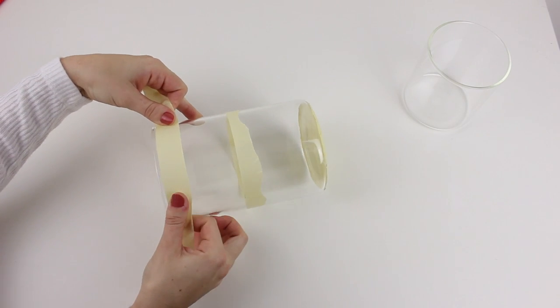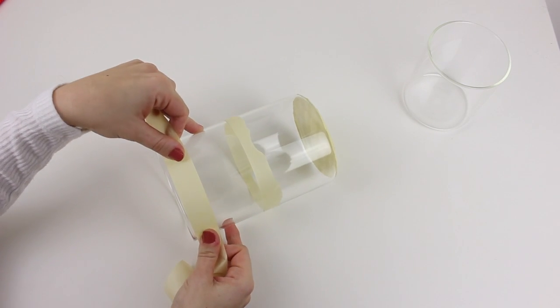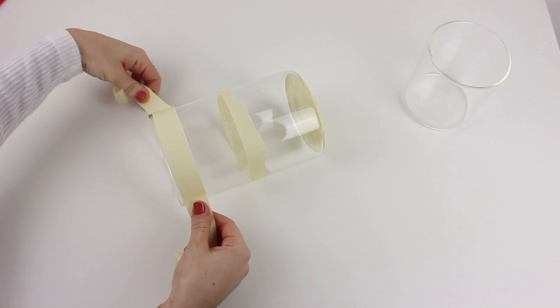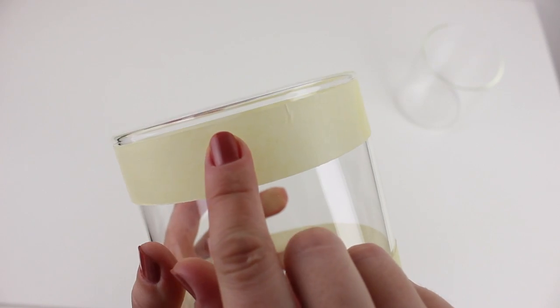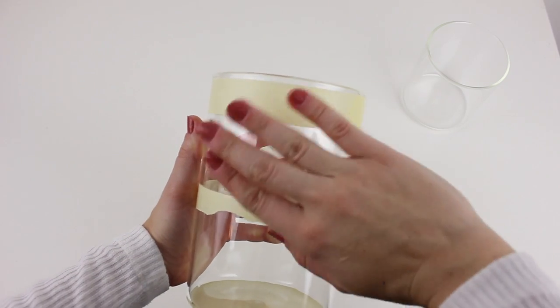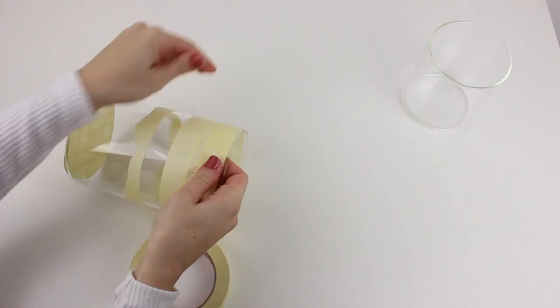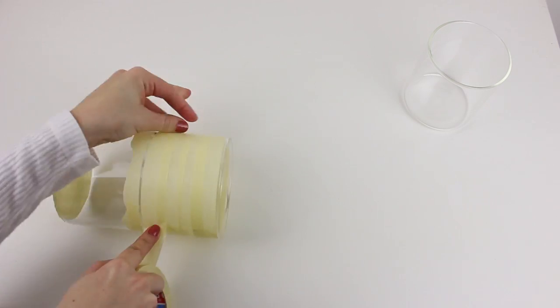You also want a copper halo at the top of the jar, and for that you have to stick tape around the border of the jar, leaving a 5mm gap, like this.